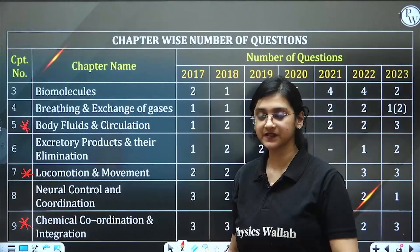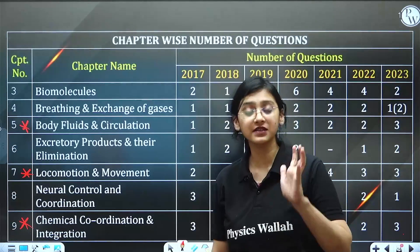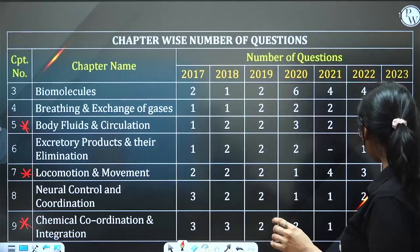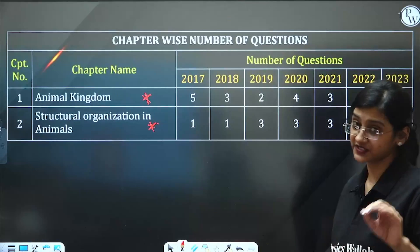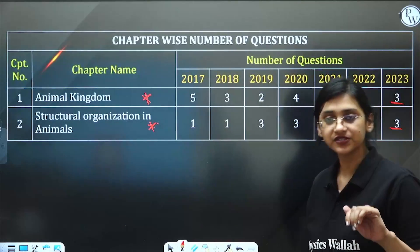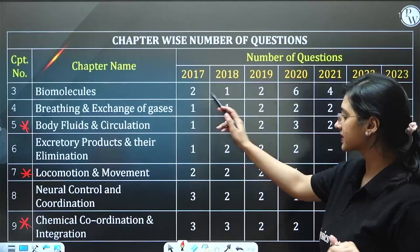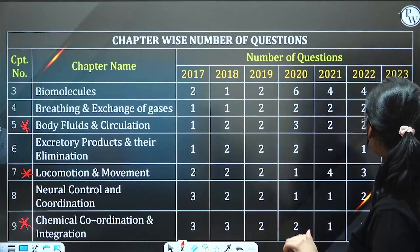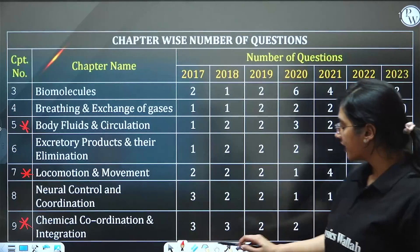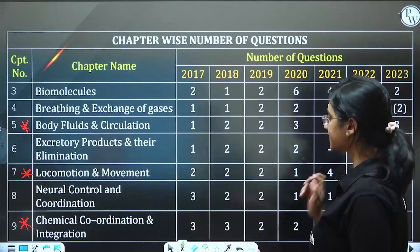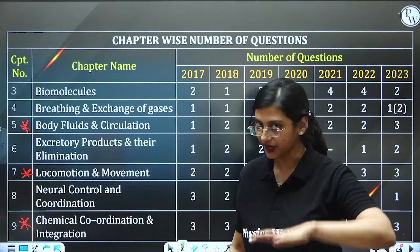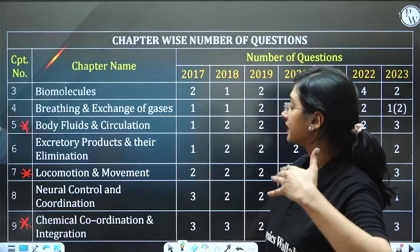So the first five chapters you must study from Class 11 are: Animal Kingdom, Structural Organization in Animals, and these three human physiology chapters — Body Fluids and Circulation, Locomotion and Movement, and Chemical Coordination and Integration. After studying these five chapters, then move on to the others.